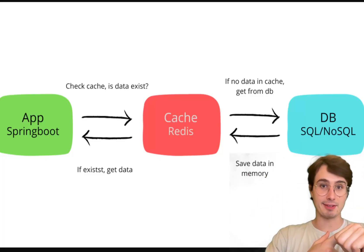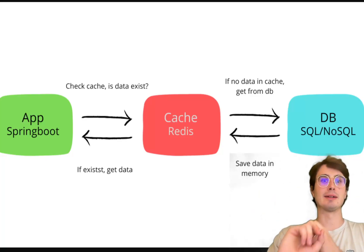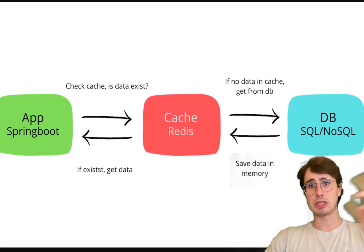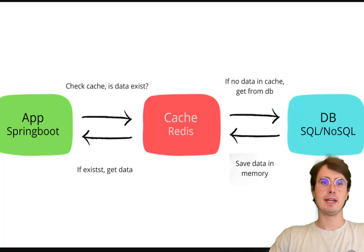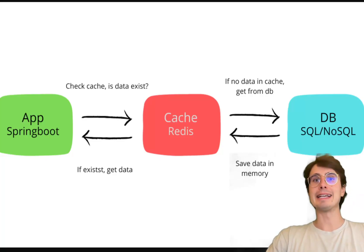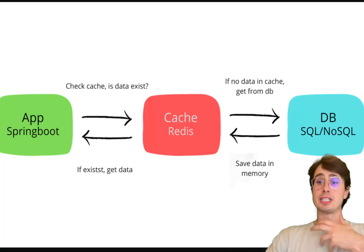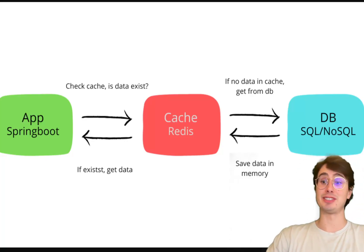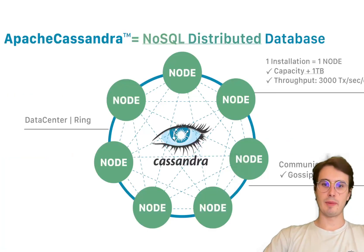Redis excels in use cases where high-speed data access is critical: caching layers, real-time analytics, leaderboard systems for games. It's also great for applications requiring simple key-value access with a variety of data structures, such as session management or message brokering. Finally, any use case where really high scalability and low latency performance are paramount is a strong fit for Redis.